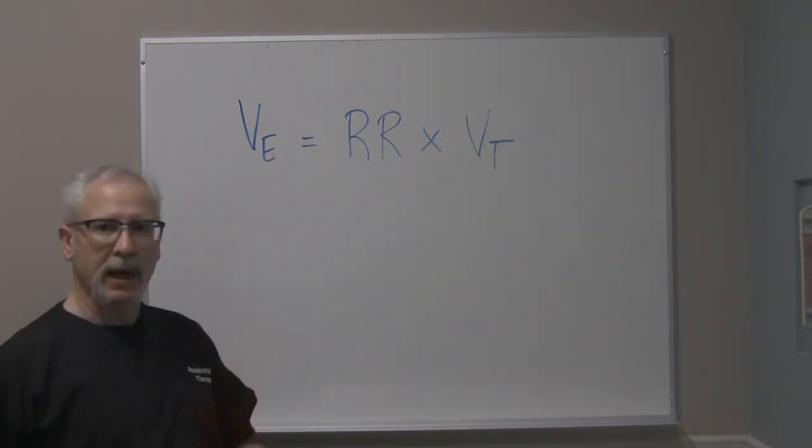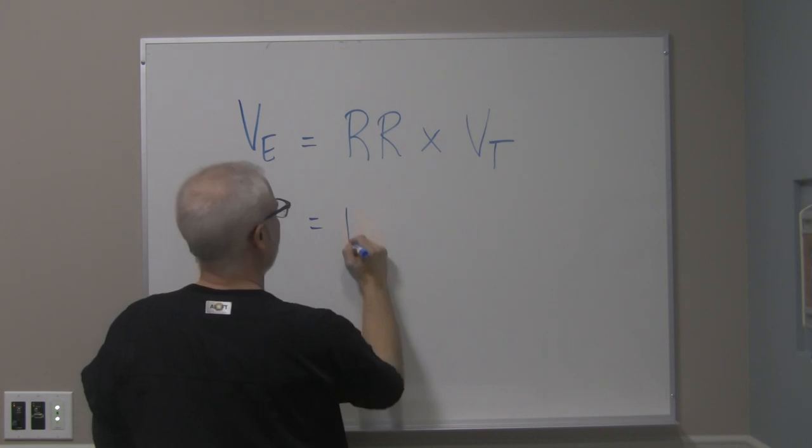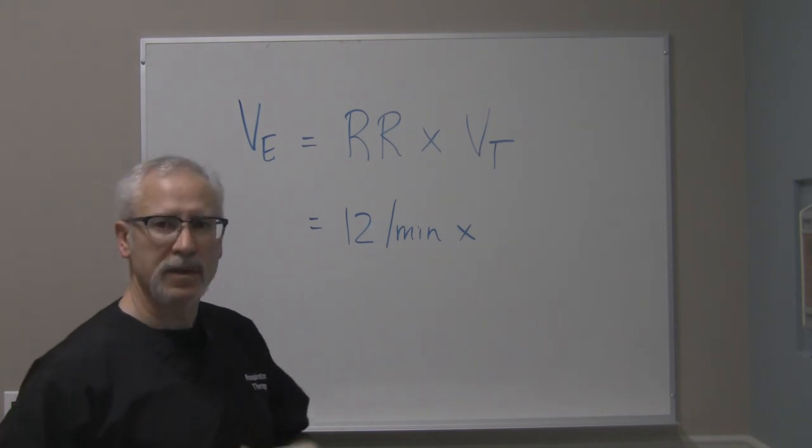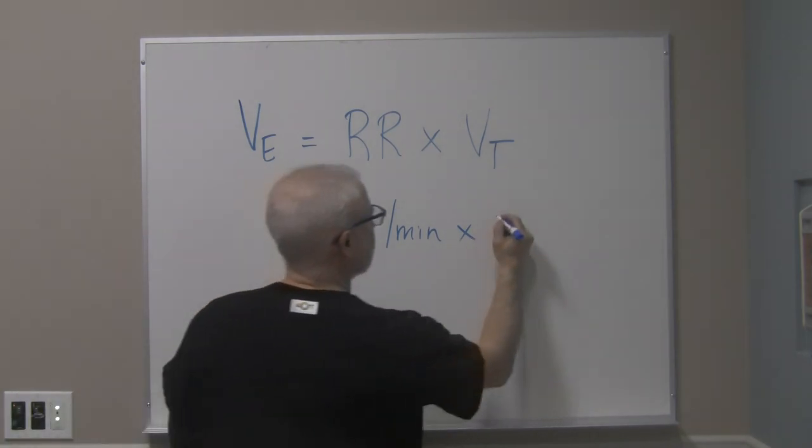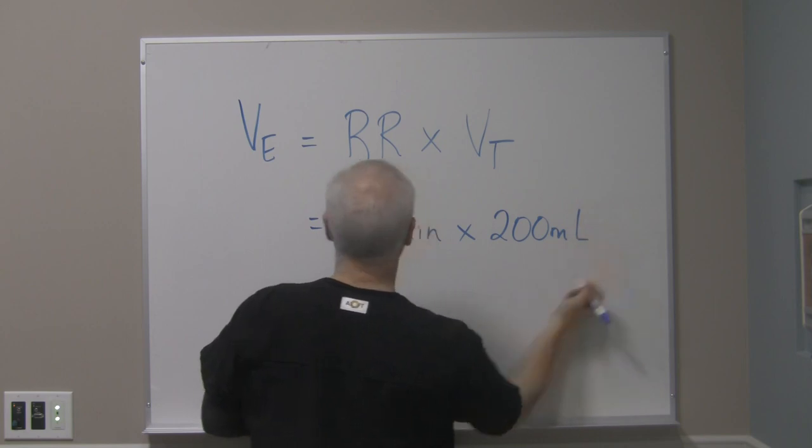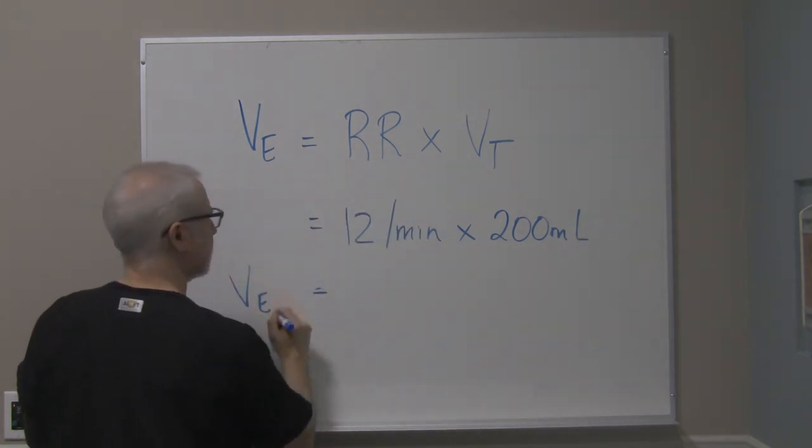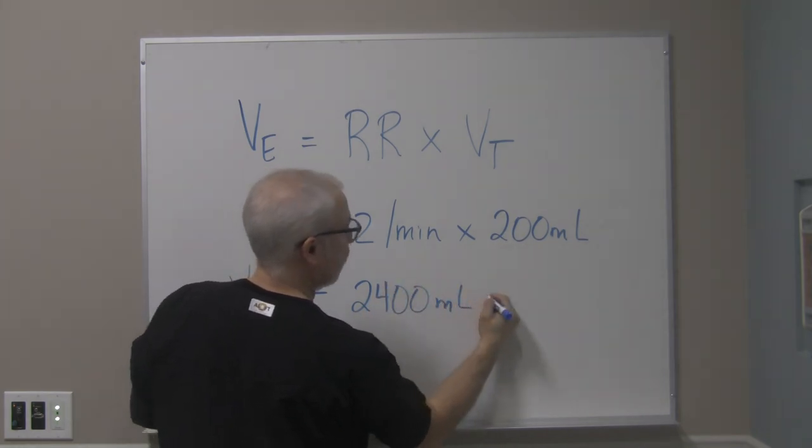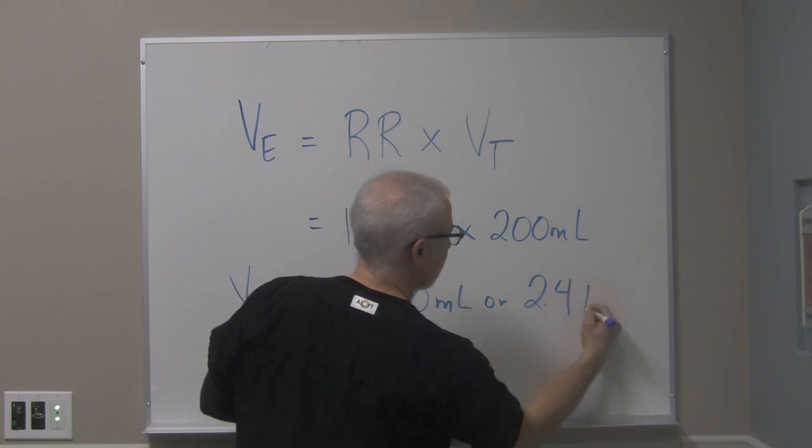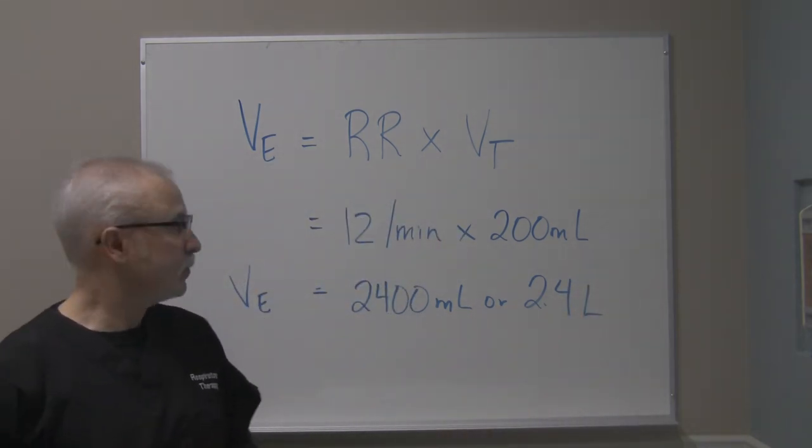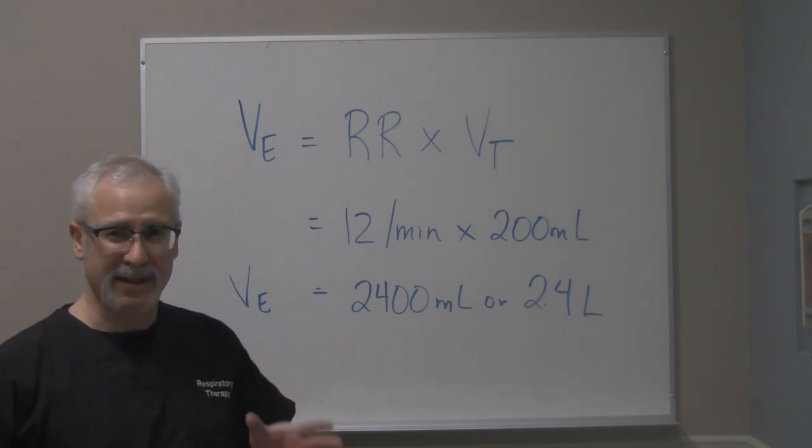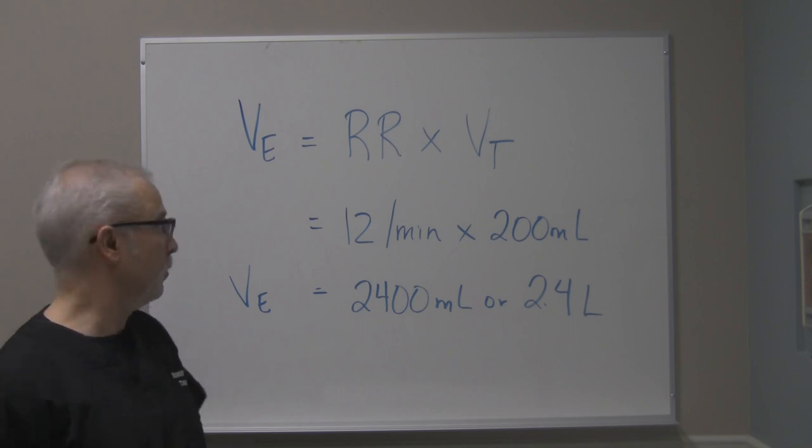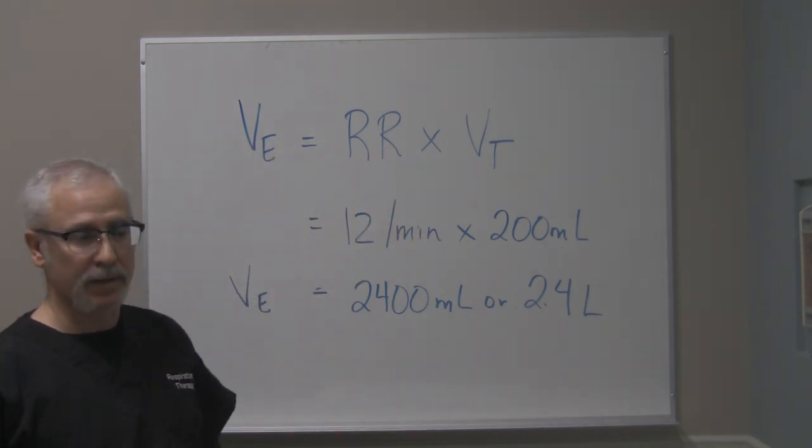So the minute ventilation, the entire volume the patient inhaled in one minute, is a function of the respiratory rate and the tidal volume. So we could say VE is equal to the respiratory rate times the tidal volume. So if you happen to have a respiratory rate of 12 breaths per minute and the patient's tidal volume was 200 mils, you could say the resultant minute ventilation then is equal to 2400 mils or 2.4 liters. And if we look at that, that minute ventilation for a normal adult is kind of low because normal should be somewhere around 5 to 7 liters in one minute. But that's how you calculate out the minute ventilation.